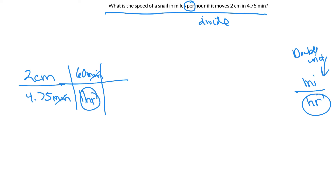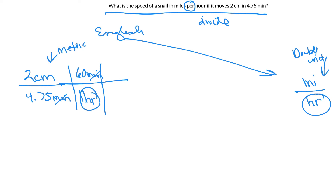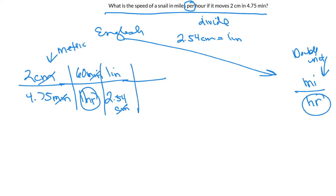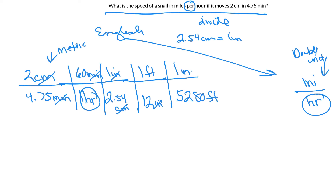Now I'm going to convert centimeters to miles. This is a metric unit and I'm trying to get to an English unit. The only metric-to-English conversion on my sheet is 2.54 centimeters equals one inch. I need to get rid of centimeters, so: 2.54 centimeters equals one inch — my centimeters cancel and now I'm in the English system at inches. I know there are 12 inches in a foot, so my inches cancel and I'm at feet.